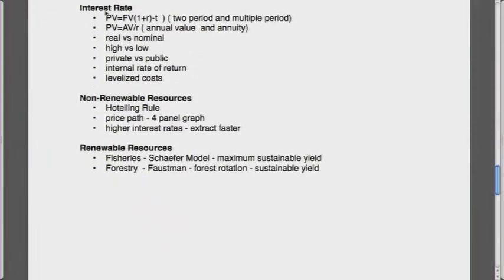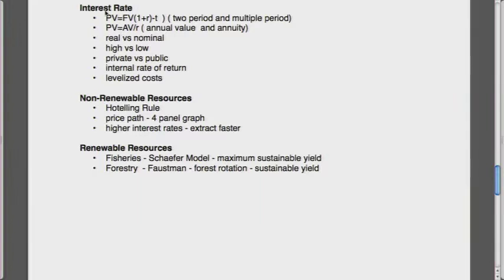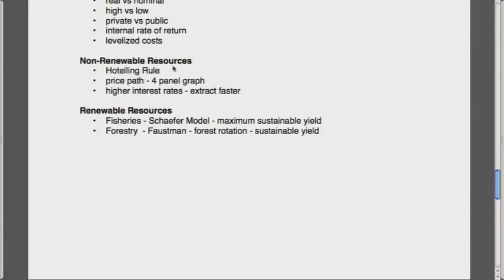Then we have section on interest rates and cost-benefit analysis. So present value - there's some simple formulas. Present value and future value are related by the interest rate and time. We have net present value and annualized value in the future. We have real versus nominal prices. We talked a lot about high interest rate versus low interest rate, what interest rate the private sector would use versus what interest rate the public sector would use. And then we have the interest rates that we can solve for the internal rate of return. We also talked about levelized costs. And then we did nominal resource models and renewable resource models.